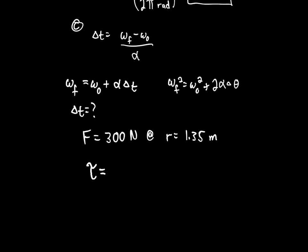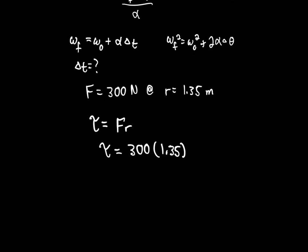Torque equals force times lever arm: 300 times 1.35 equals 405 Newton-meters. Now I have the torque, and I want the angular acceleration. Just like F equals ma in linear motion, in rotational motion torque equals I times alpha.